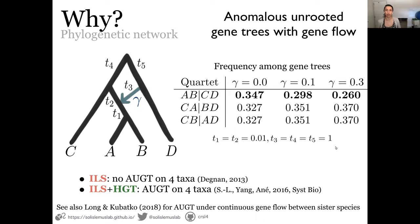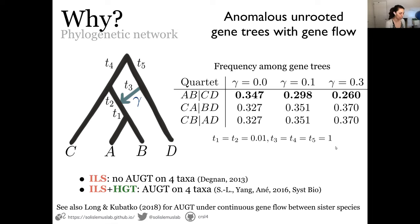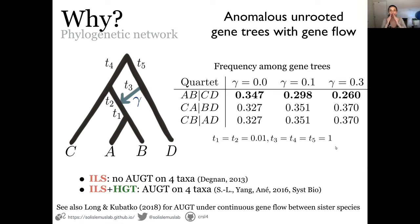To explain why this happens, we recall the concept of anomalous gene trees. James Degnan showed that there are no anomalous gene trees when you have only four taxa under ILS alone. Anomalous gene trees are gene trees that have a higher probability of appearing in your sample but conflict with the species tree. In this network example, there is one gene flow event that is ancestral to the speciation of A and B, so we would expect gene trees to have the AB clade.